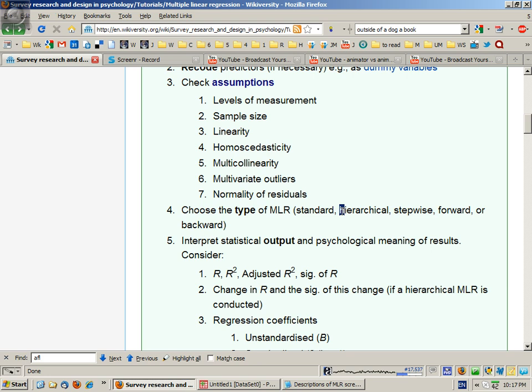If you have a particular reason to enter your independent variables in an order or group them up into separate sets, then you would use hierarchical. And if you wanted to let the computer choose for you which predictors go in and out, then use stepwise, which is a combination of forward or backward regression.